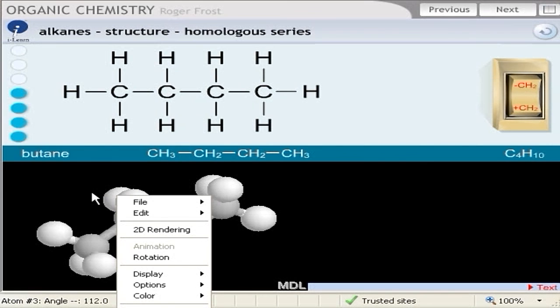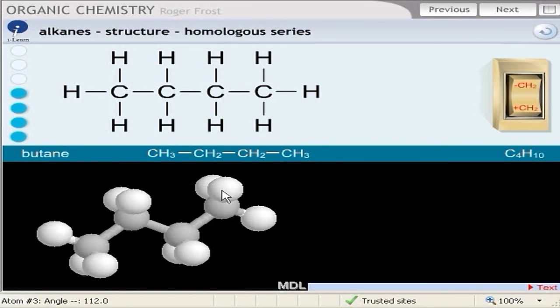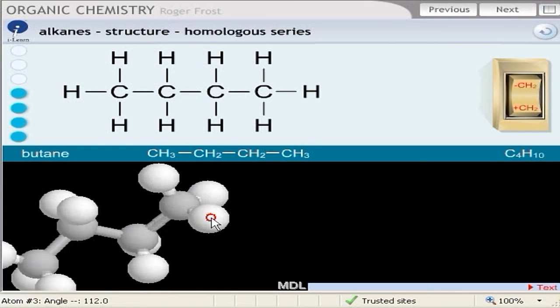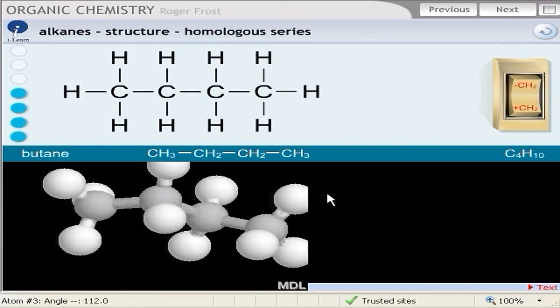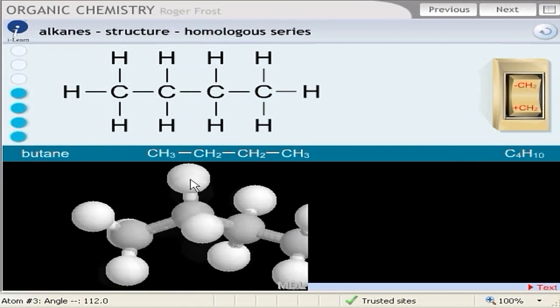One last thing to show you which you can use when you come to discuss isomerism is called sculpt mode. Click sculpt mode and then click on one area and you see that you can actually twist this thing round. So its shape is anything but certain.